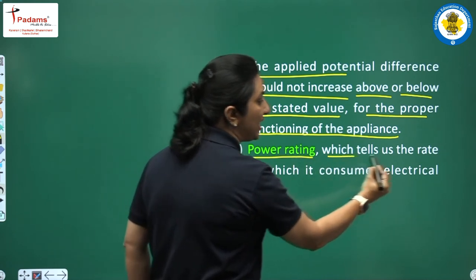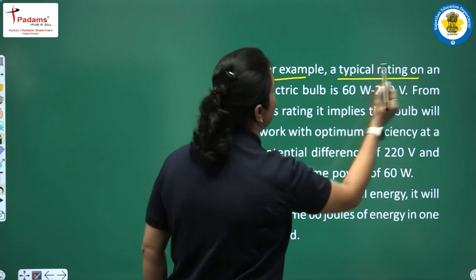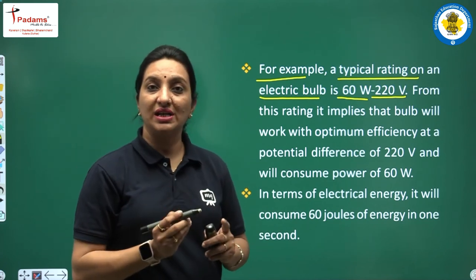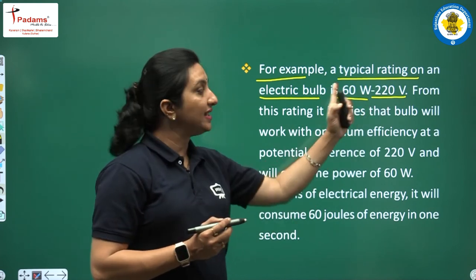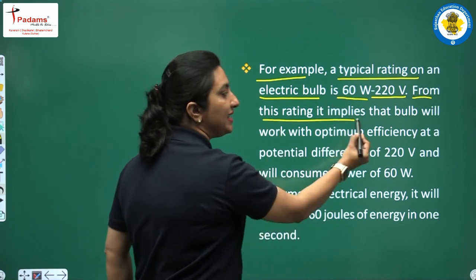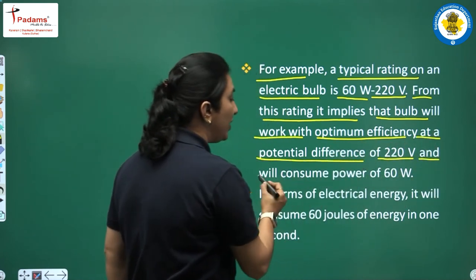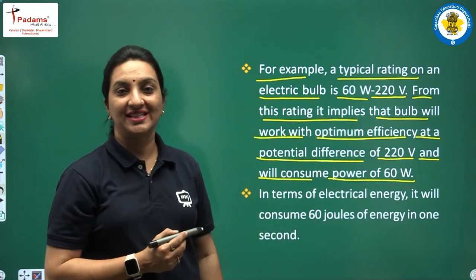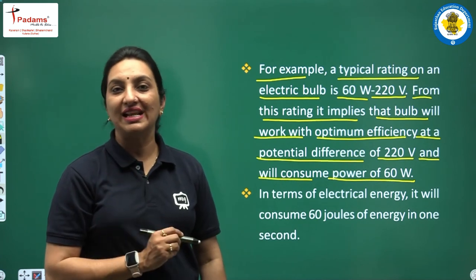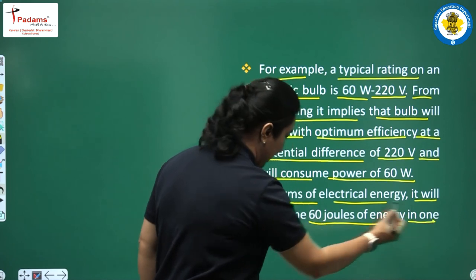The power rating tells us the rate at which the appliance consumes electrical power. For example, a typical rating on an electrical bulb is 60 W, 220 V. This means the bulb works with optimum efficiency at 220 volts and consumes 60 watts of power. In terms of electrical energy, it will consume 60 joules of energy in one second.